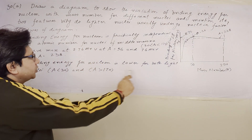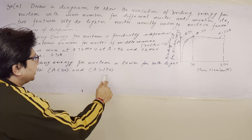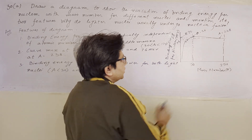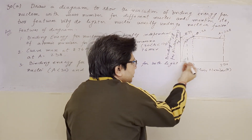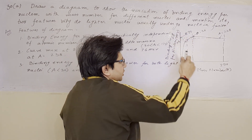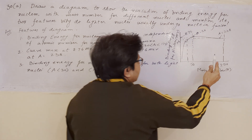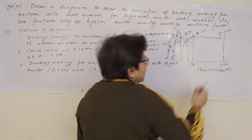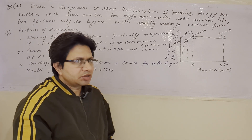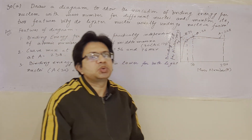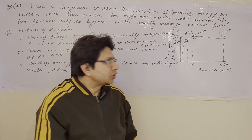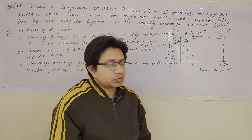The binding energy per nucleon is lower for both light nuclei with A less than 30, and heavy nuclei with A greater than 170. Below mass number 30, the binding energy per nucleon is lower, and above 170 it also goes down. Since binding energy per nucleon denotes stability, a higher value means the nucleus is stable and a lower value means it is unstable.